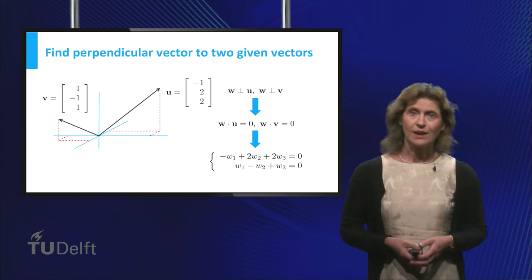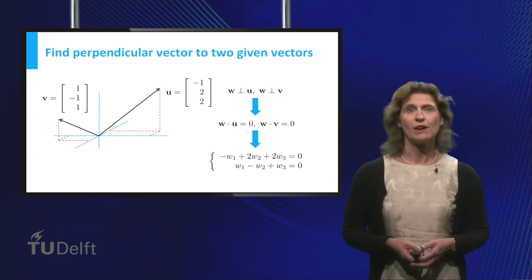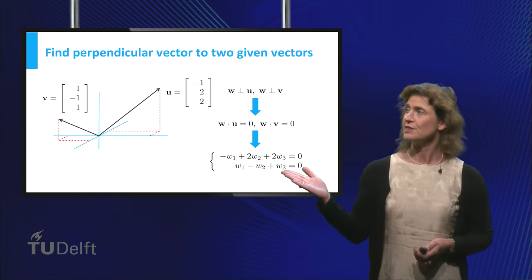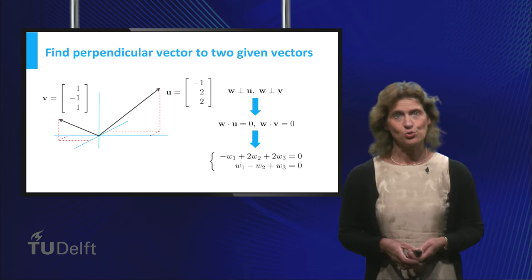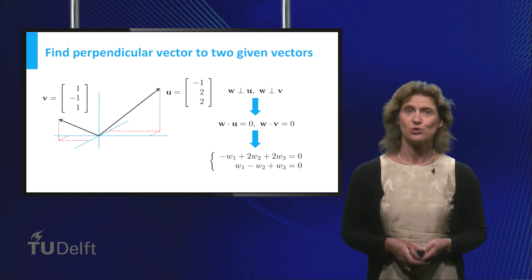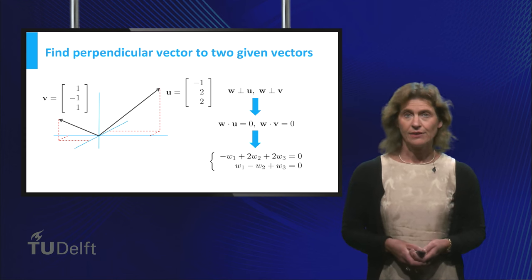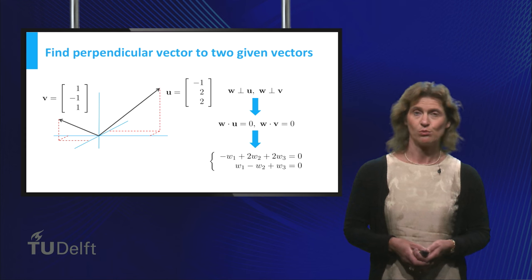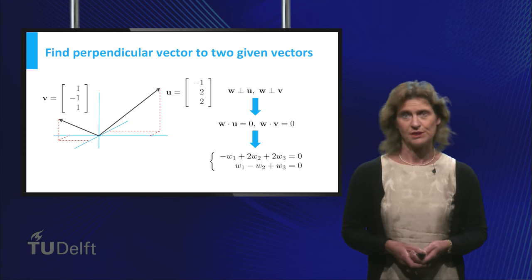For our example, this means you have to solve the following two equations. Minus w1 plus 2 times w2 plus 2 times w3 equals zero. And w1 minus w2 plus w3 equals zero.